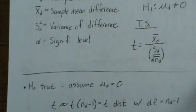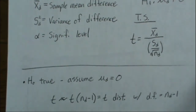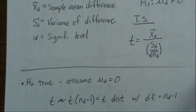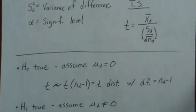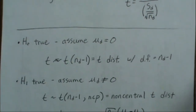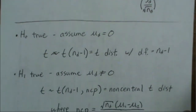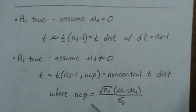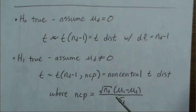Under the null hypothesis, it's a central t-distribution with n minus one degrees of freedom, and under the alternative, it's a non-central t with a specific non-centrality parameter. This is what we're going to further investigate on the next page.